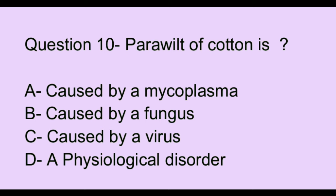Question number 10. Para wilt of cotton is: Option A: caused by a mycoplasma. Option B: caused by a fungus. Option C: caused by a virus. Option D: a physiological disorder. The correct answer is option D, which is a physiological disorder.